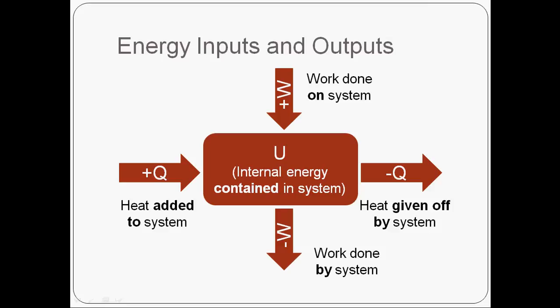On the right and the bottom of this diagram, we have the energy outputs, the ways that our system is giving off energy. So we've got negative Q and negative W to represent the heat being given off by the system and the work being done by the system on its surroundings. We make those negative because in both cases, our system is losing energy. Now, all these inputs and outputs are all sort of centered around this big well of energy in our system, which we represent with a capital U to represent all the internal energy contained within the system.